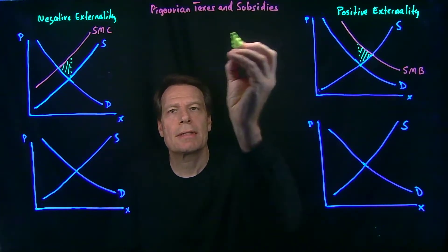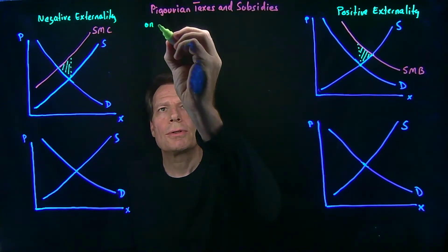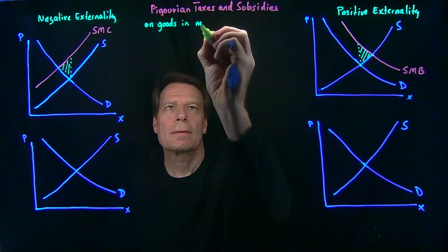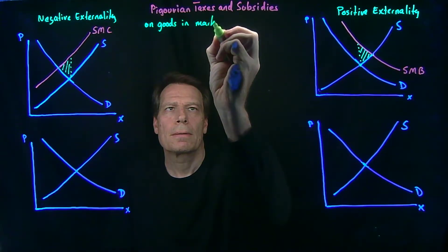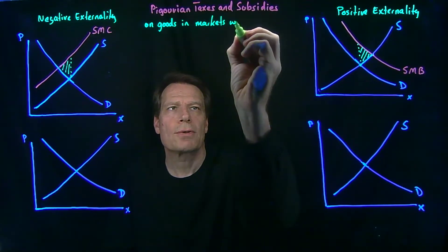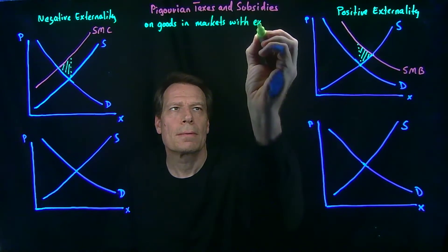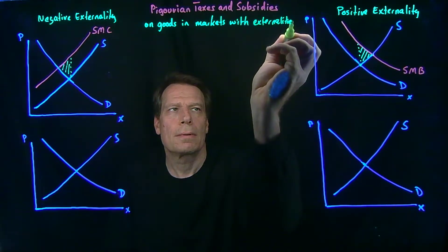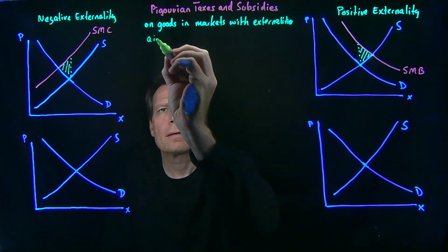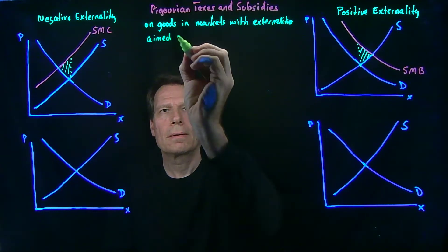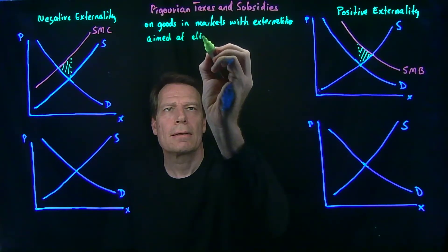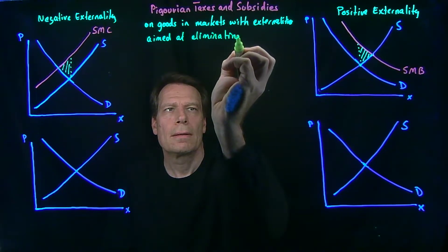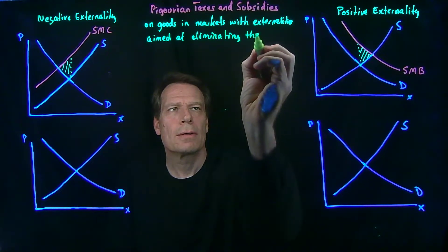So these are taxes and subsidies on goods in markets with externalities, and they're aimed at eliminating the deadweight loss in those markets.